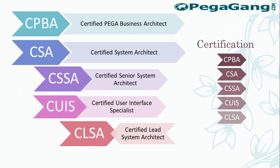There are different levels of Pega certification available. At the initial level you can go for CPBA (Certified Pega Business Architect) or CSA (Certified System Architect) to learn the fundamentals. After that you can progress to CSSA (Certified Senior System Architect), then UIS (User Interface Specialist), and finally the top-level certification, CLSA (Certified Lead System Architect).